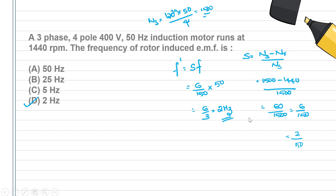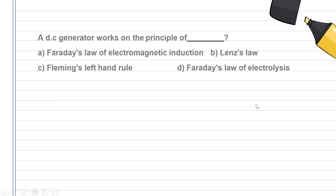The rotor frequency f' = s × f. DC generator works on the principle of Faraday's law of electromagnetic induction. That's right — Faraday's law of electromagnetic induction.